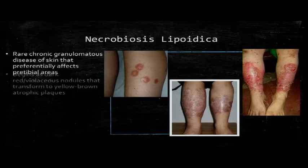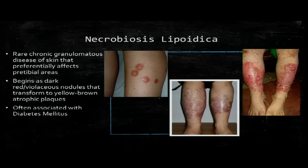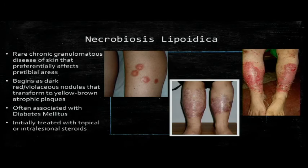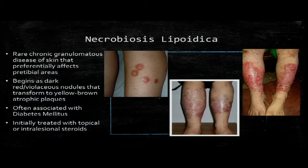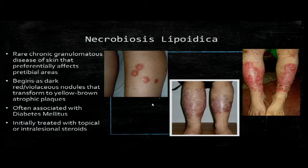Necrobiosis lipoidica may also be confused with cellulitis. It has an unclear pathogenesis but is theorized to involve glycogen deposits in blood vessel walls leading to microangiopathy. It is extremely rare, typically affecting diabetics — about 0.3 to 1.2% of them — and women more than men. Over time, plaques coalesce into larger sections of the lower extremities and can eventually ulcerate and become extremely painful. Initially asymptomatic, patients may complain of pruritus and anesthesia at areas of skin involvement.